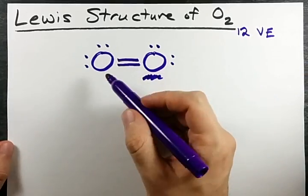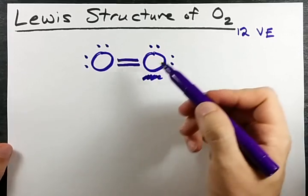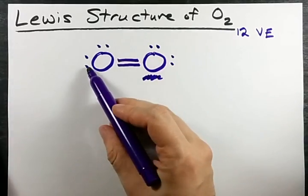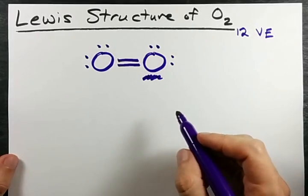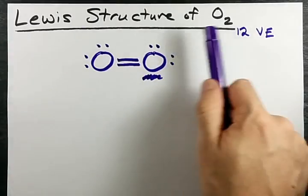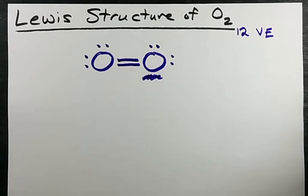If you're into calculating formal charge, you'll find that each oxygen has a formal charge of zero. Because there are four lone electrons and two bonds on each oxygen. Now, if you were asked for the Lewis structure of O2, this is probably what your teacher wants.